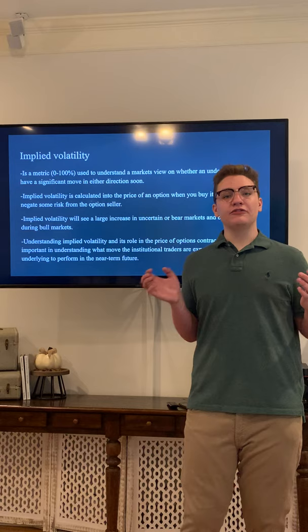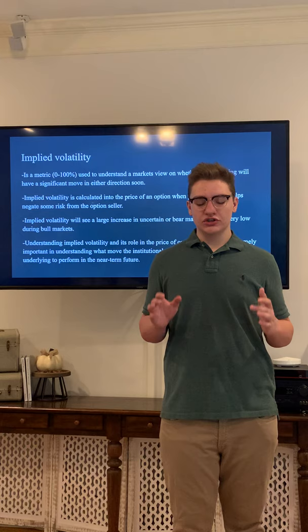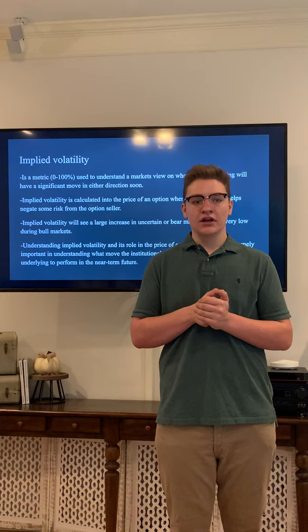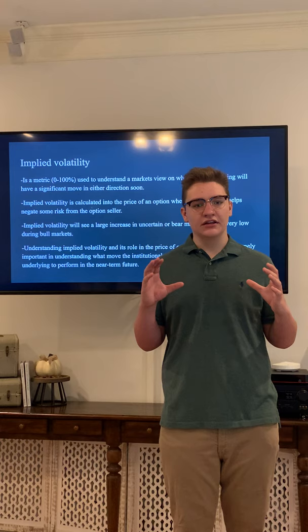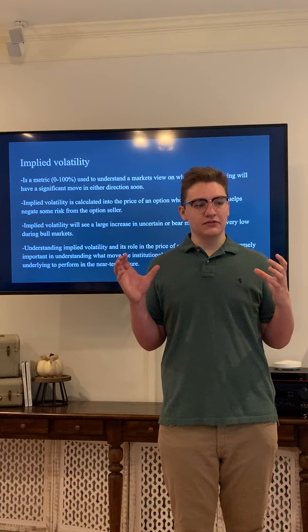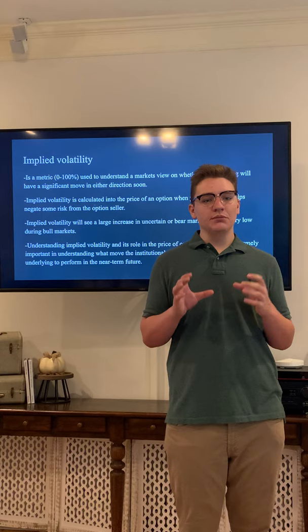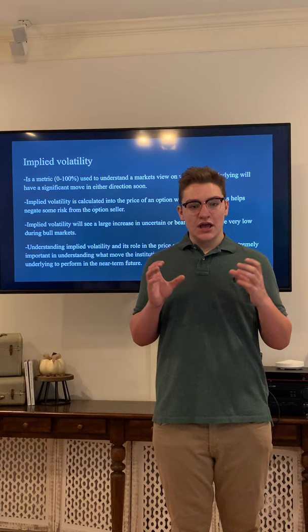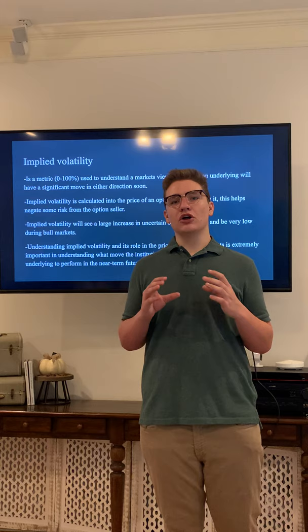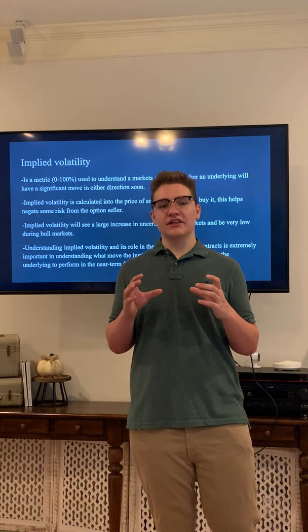Implied volatility helps investors understand the level of volatility when trading an underlying. It is a metric from zero to 100% used to gauge the market's view on whether an underlying will have a significant move. Implied volatility is calculated into the price of an option, which helps negate some risk for the option seller on volatile underlyings. Implied volatility will see a large increase in uncertain or bear markets and be low in bull markets. Understanding it is crucial to predicting price movement correctly.